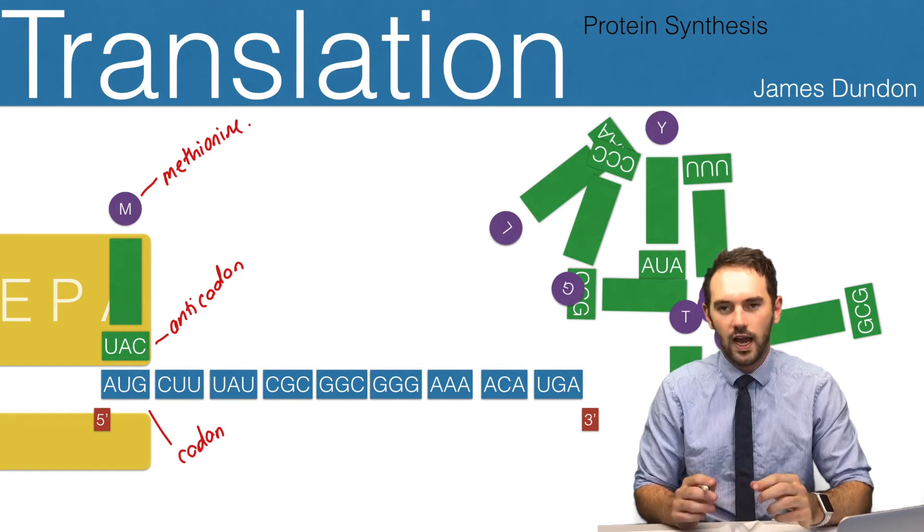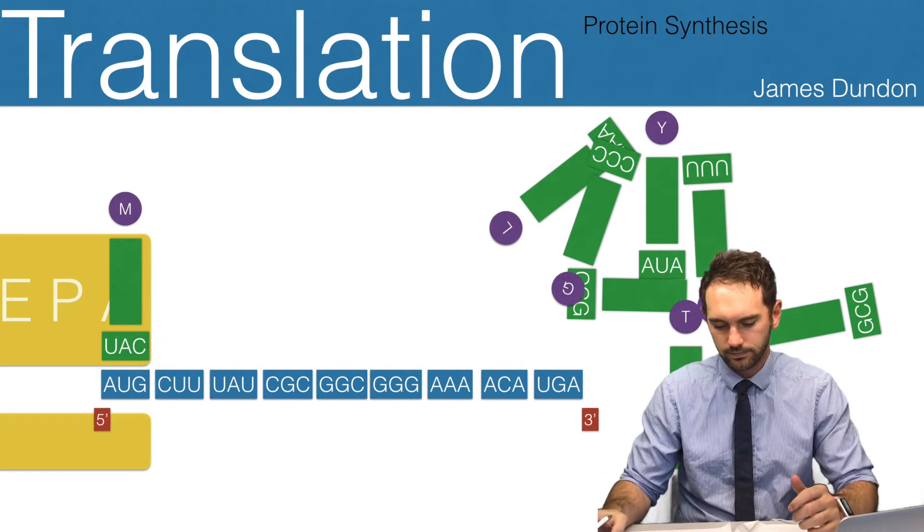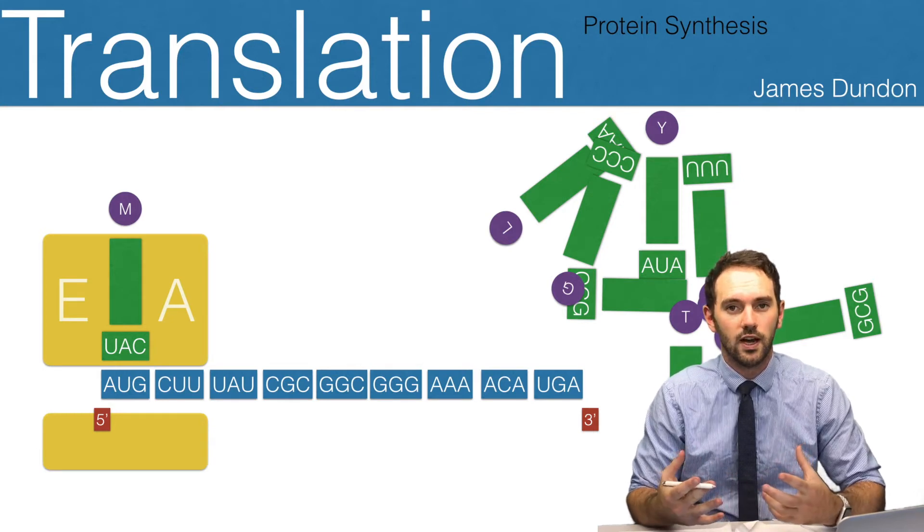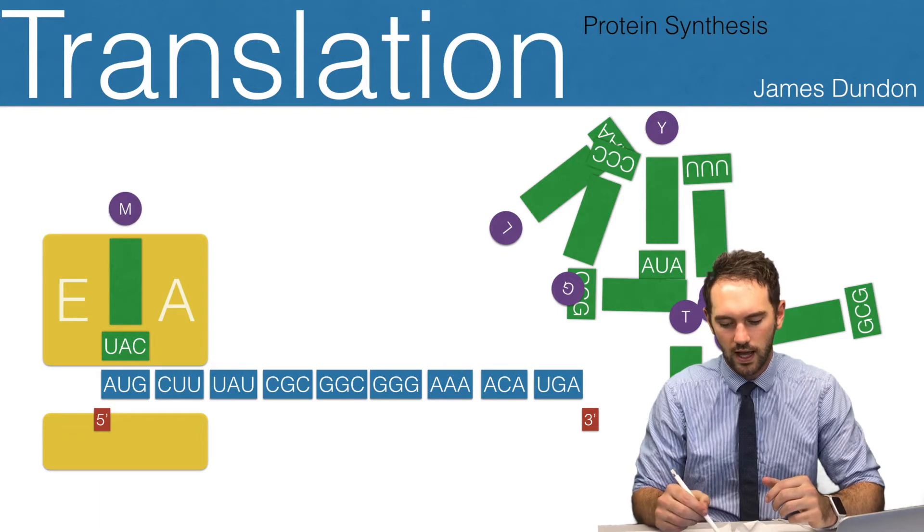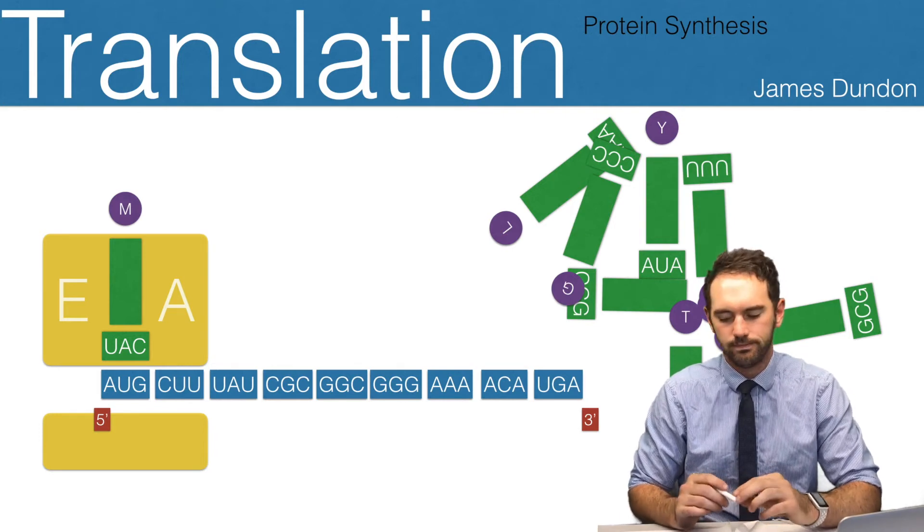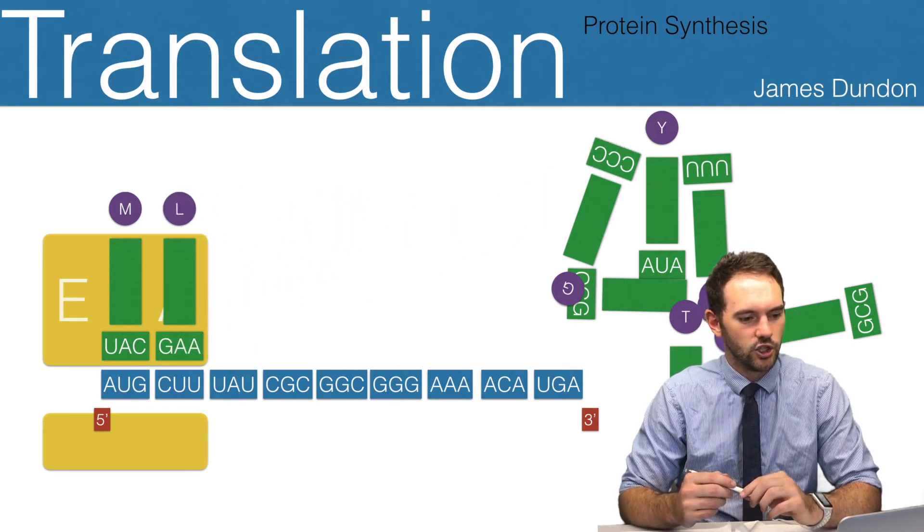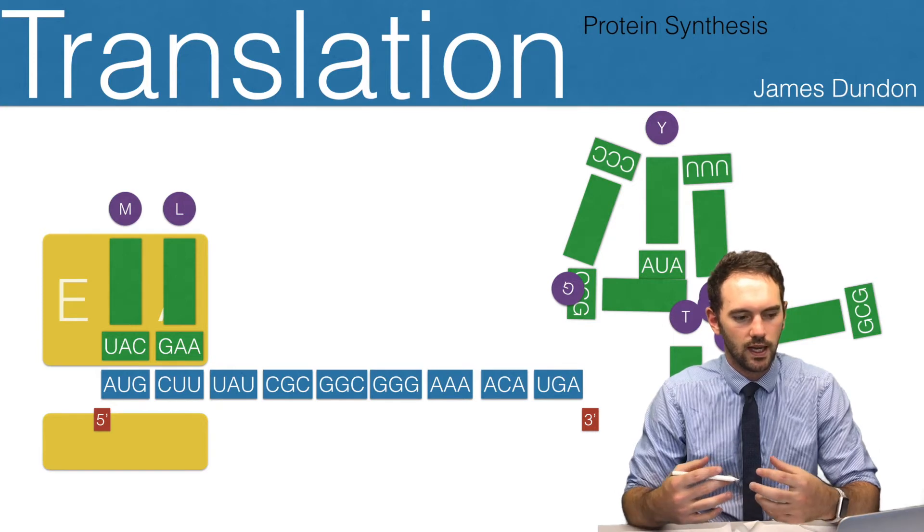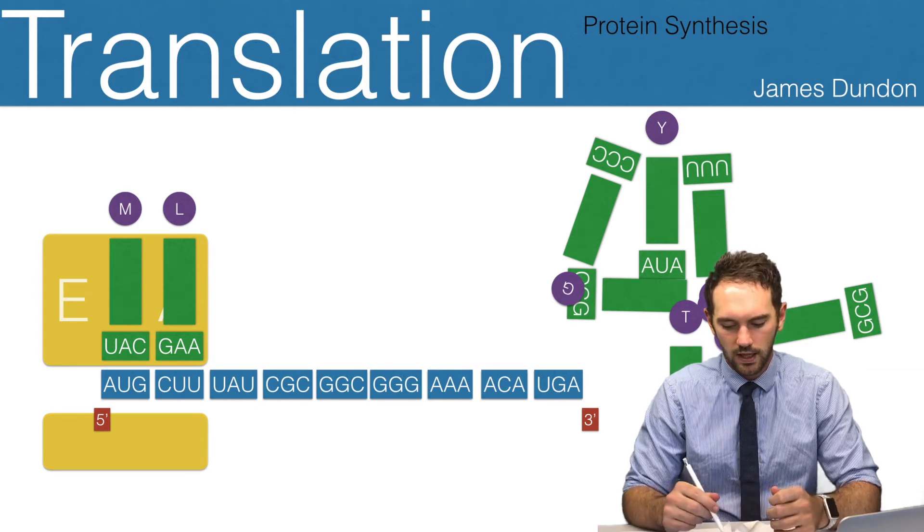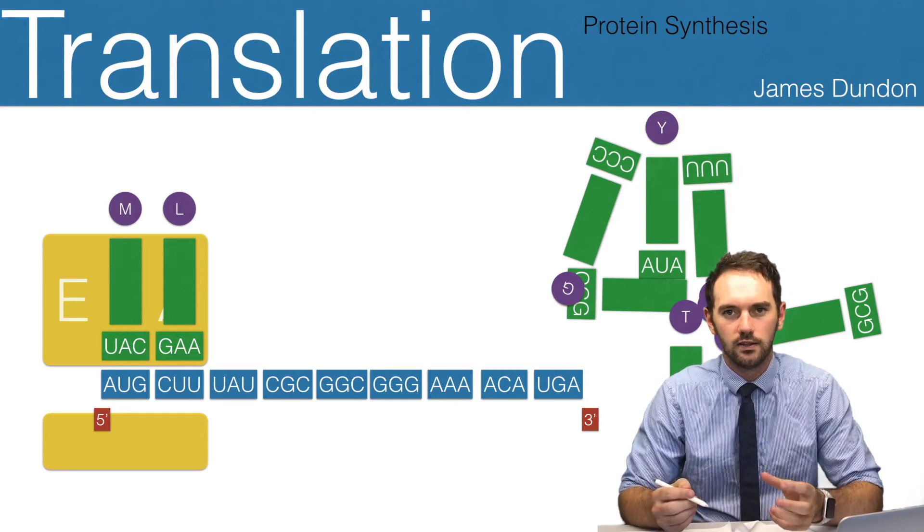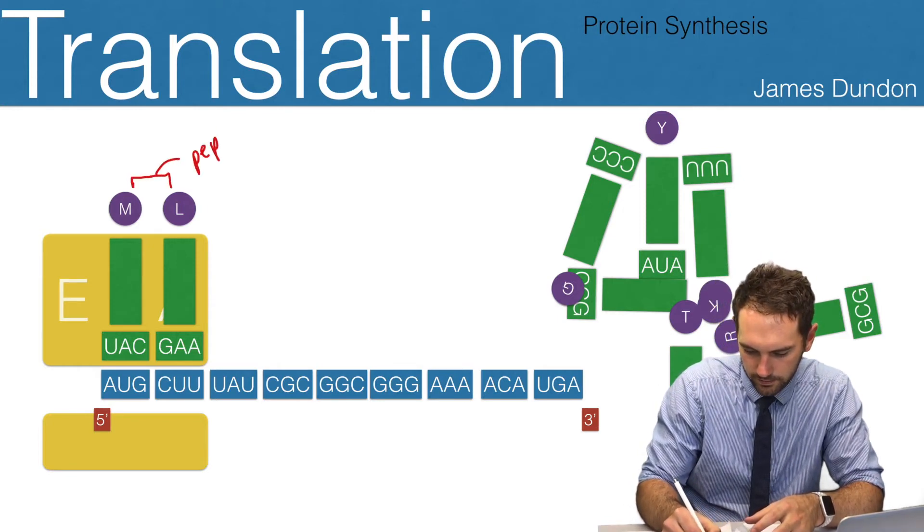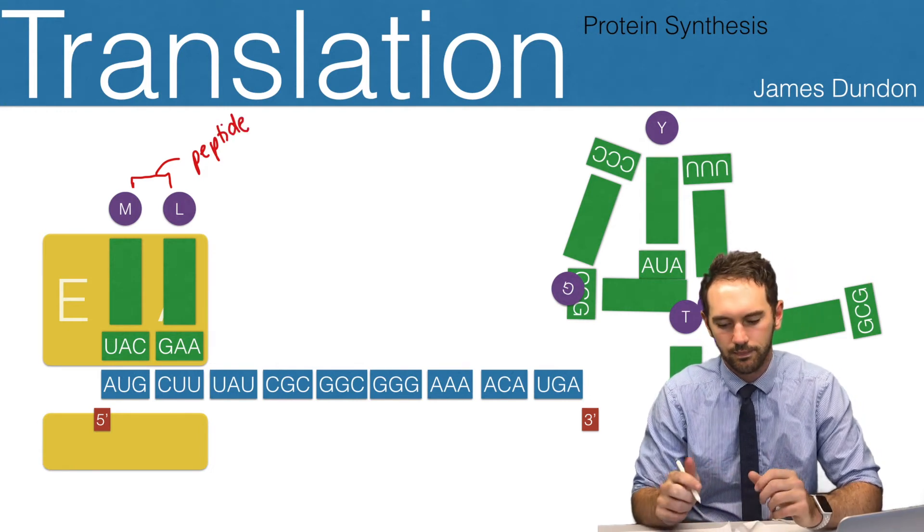After that happens, our ribosome shifts across one codon. Now we've got an exposed CUU, so we're looking for a transfer RNA to be complementary to that, to move into that A arriving site. Now we have our GAA anticodon move into the A site and complementary base pair with the CUU. Now we've got our two amino acids quite close to each other. When they're so close, we can actually form a covalent bond between those two amino acids, and it is called a peptide bond.